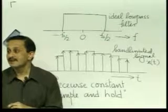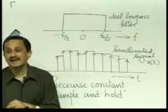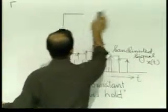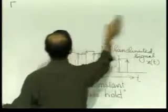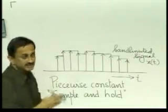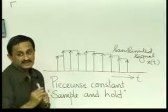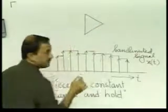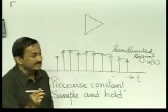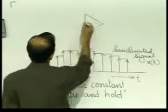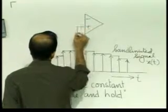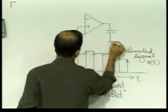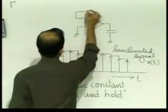We shall now interpret the operation of sample and hold in the frequency domain. Before that, we should justify why we are looking at this operation so carefully. This operation is implementable by a very simple circuit and therefore is practically realizable. All that we need to implement this operation is an operational amplifier with some capacitors, resistors, and field-effect transistors.